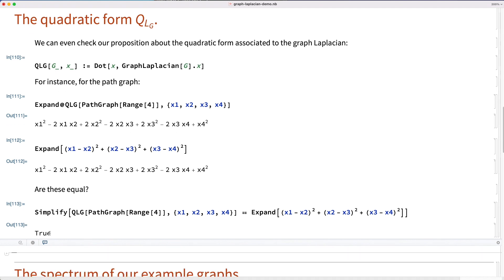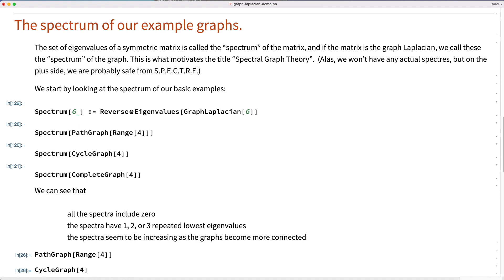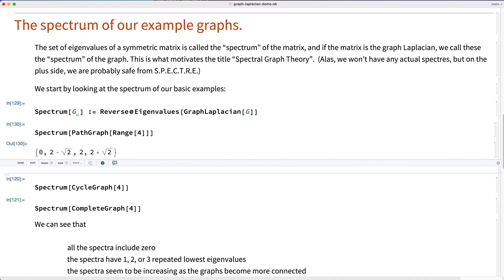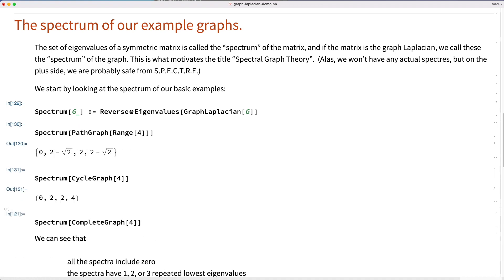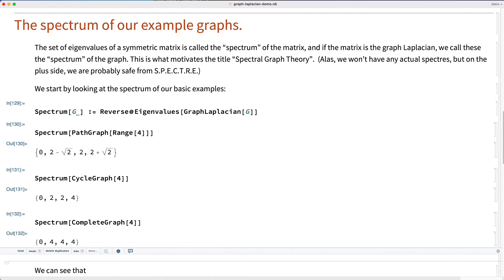You can check that mechanically with Mathematica by simplifying the expression one equals the other, and you get true. Here's the code that defines the spectrum, here's the example for the path graph, for the cycle graph, and for the complete graph.